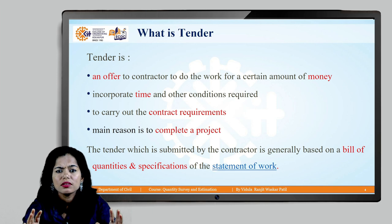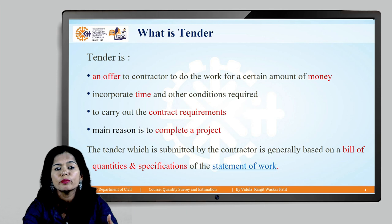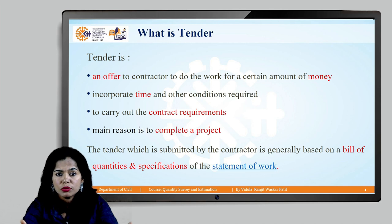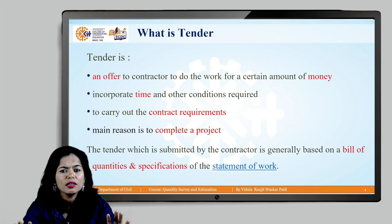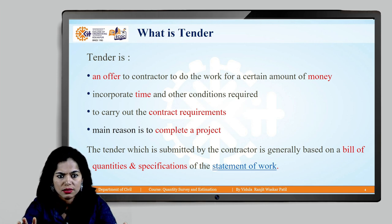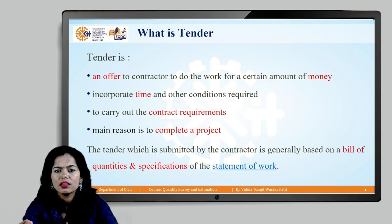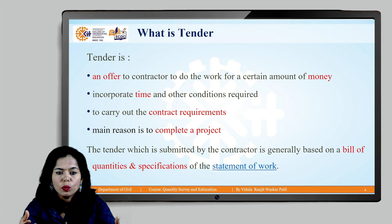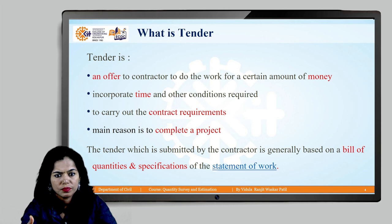A tender is a full set of documents containing all information related to that project — drawings, bill of quantities, specifications on how the work should be carried out, time, and other conditions. It is essentially an offer or proposal given to the contractors. Since we cannot explain all technical information one-to-one, we provide it in document form, which the contractor reads and then submits their proposal or bid.